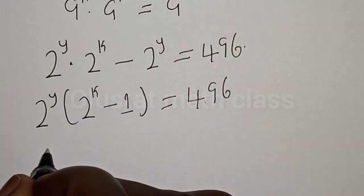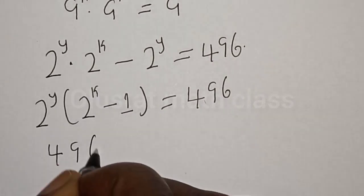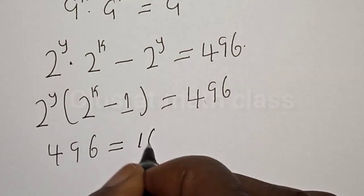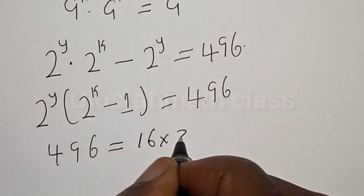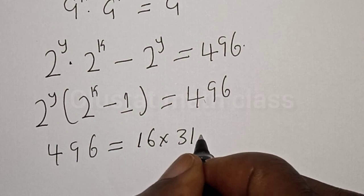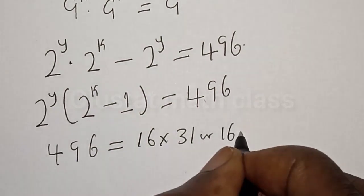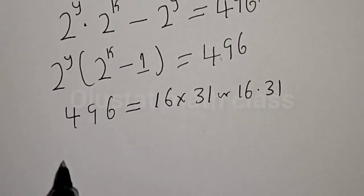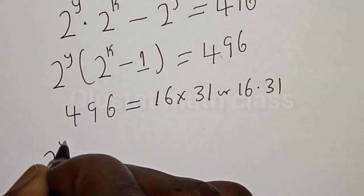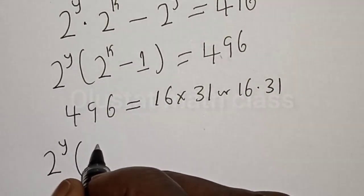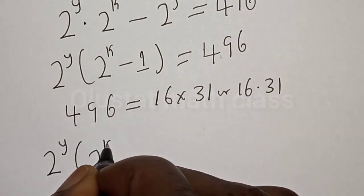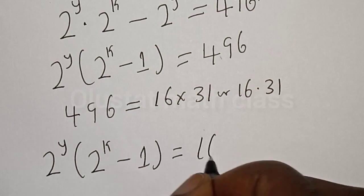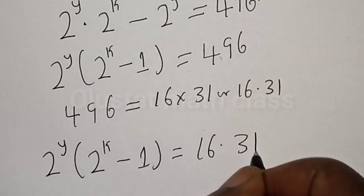Then we have 2 raised to power y, multiplied by the quantity 2 raised to power k minus 1, is equal to 496. Now, 496 can be expressed as 16 multiplied by 31. Therefore, our equation becomes 2 raised to power y, into 2 raised to power k minus 1, is equal to 16 multiplied by 31.